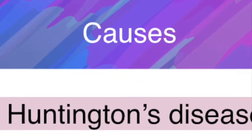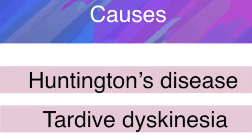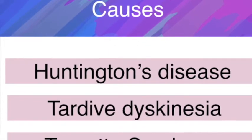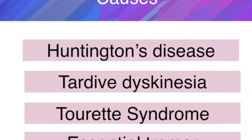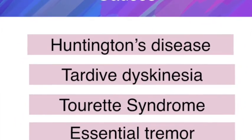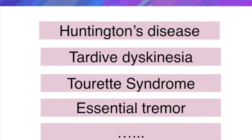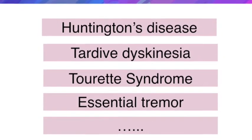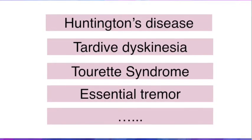There can be a number of possible causes for hyperkinetic dysarthria. Probably the most famous one would be Huntington's disease, which is a horrible genetic disease. Tardive dyskinesia is caused by long-term use of neuroleptic drugs used to treat psychiatric conditions. Tourette's syndrome is another one. It's believed that the main characteristic of Tourette's is cursing and swearing, but in fact that aspect is really exaggerated — it's not the most common aspect.